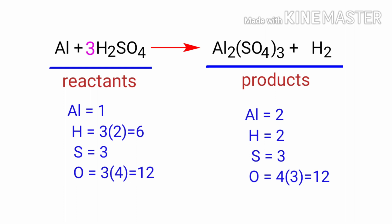Now we need to balance the Hydrogen and Aluminium atoms. To do this, we need to put a coefficient of 2 in front of Al.